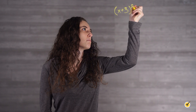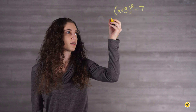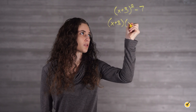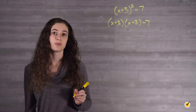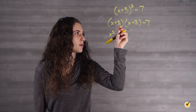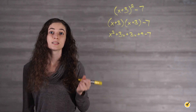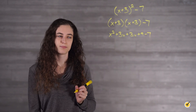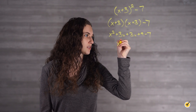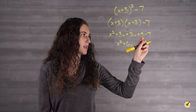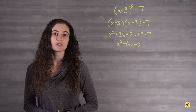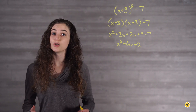To check our work, we simplify the vertex form expression as follows. Step 1: expand the squared binomial term — x plus 3 squared minus 7 becomes x plus 3 times x plus 3 minus 7. Step 2: multiply the binomials to get x squared plus 3x plus 3x plus 9 minus 7. Step 3: combine like terms — 3x and 3x give 6x, and 9 minus 7 gives plus 2. This result, x squared plus 6x plus 2, is the original standard form expression, so we know our work is correct.